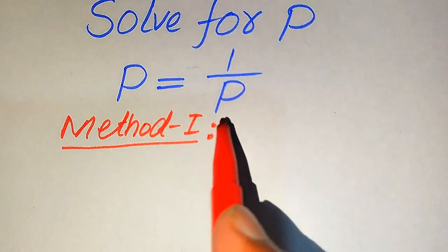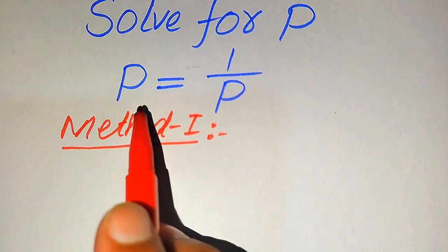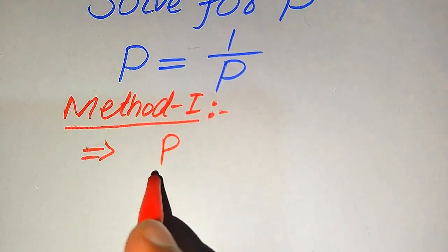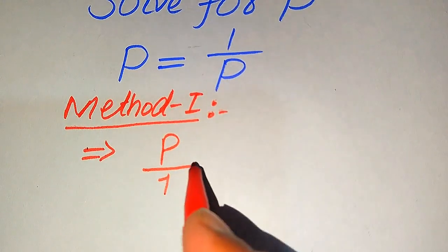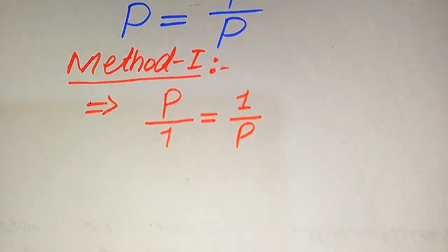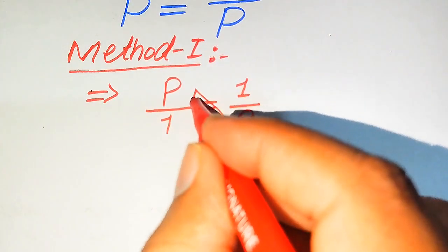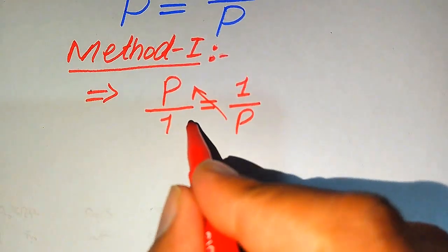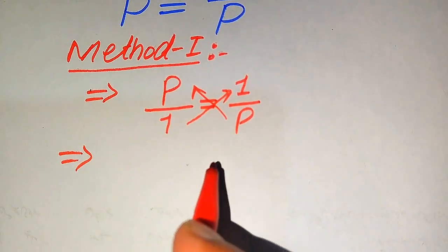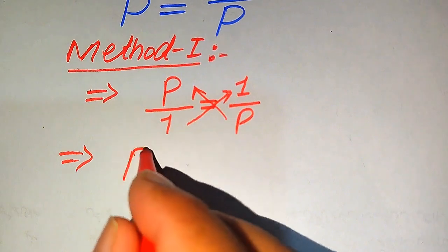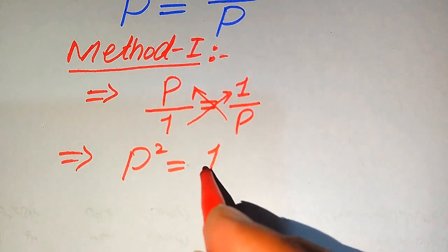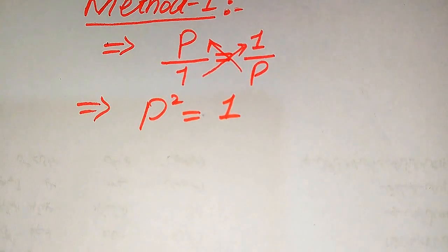In the first method, we move P to the left-hand side. So the left-hand side is P with denominator 1, and the right-hand side is 1 divided by P. In the next step we cross multiply: P times P and 1 times 1. After cross multiplication, we get P times P equals P squared, and 1 times 1 equals 1.